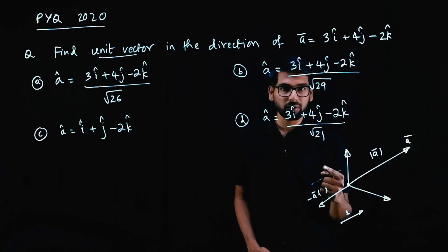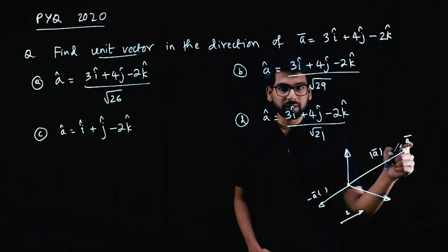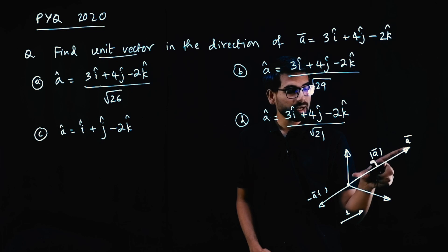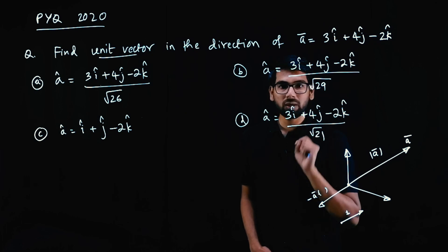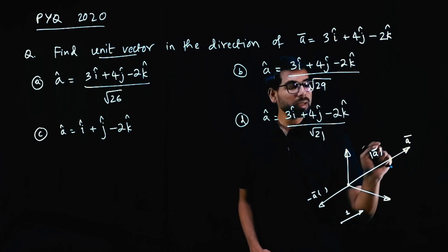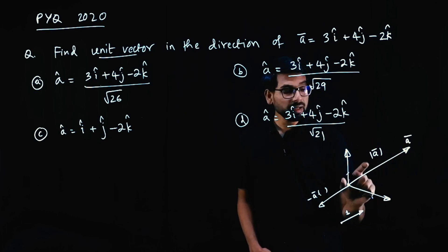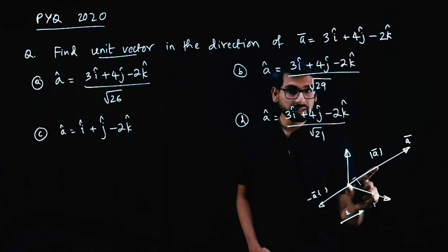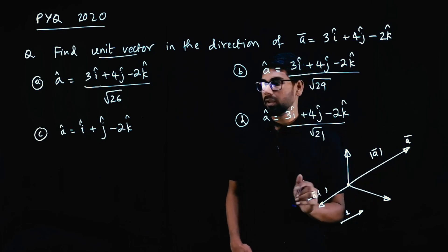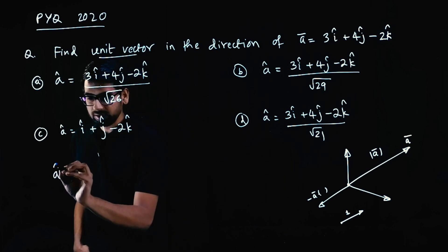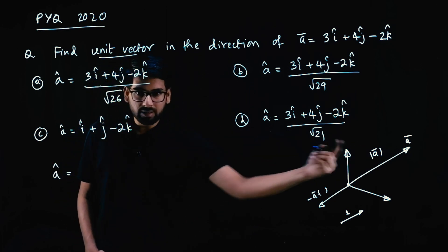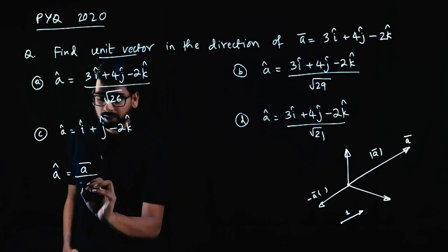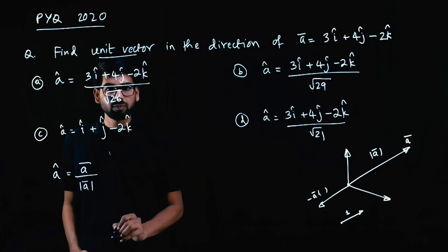How do we get the unit vector connected to ā? We divide ā by its length. Suppose the length is 4 — divide by 4, and you get 1. So ā divided by the magnitude of a gives length 1. So the unit vector â in the direction of a is ā divided by |a|.